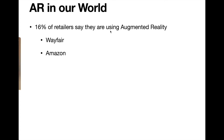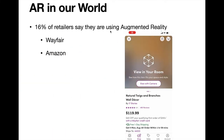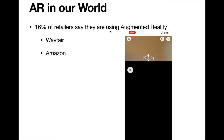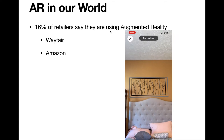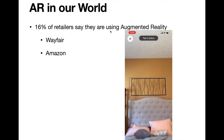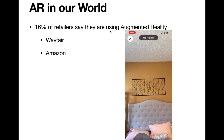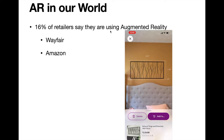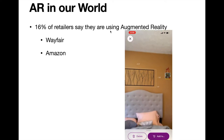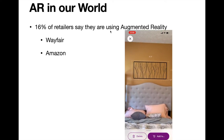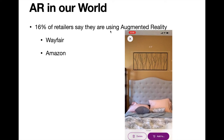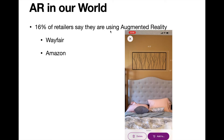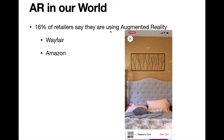We'll start with the Wayfair app. Here I have found a twig and branch piece of art that I want to see how it fits in my guest bedroom. I can tap to place it where I want on the free space on the wall. You can see it then gives me the measurements, and I can move it around to make sure it will fit centered on the headboard. If I like it, I can add it to my cart.